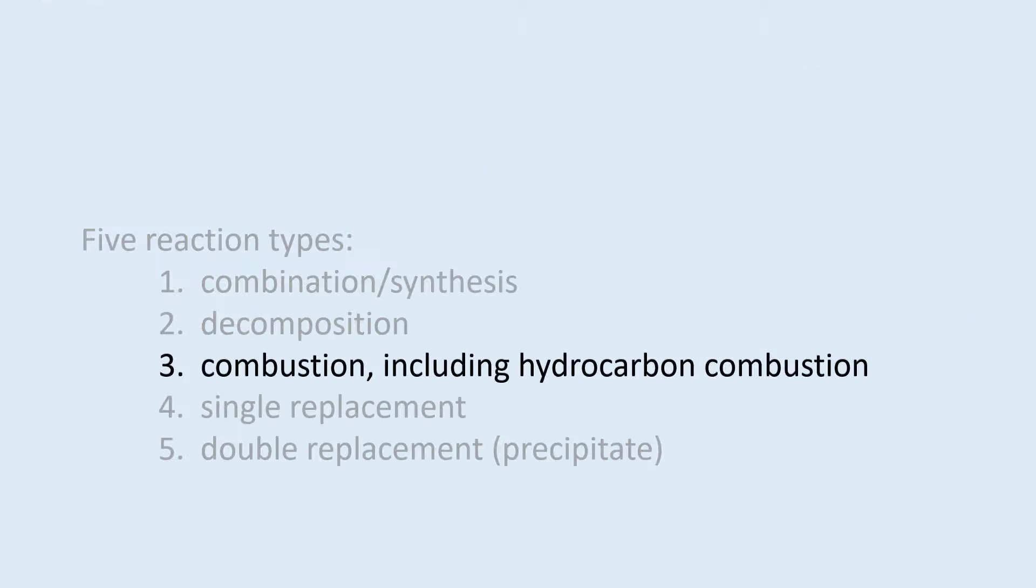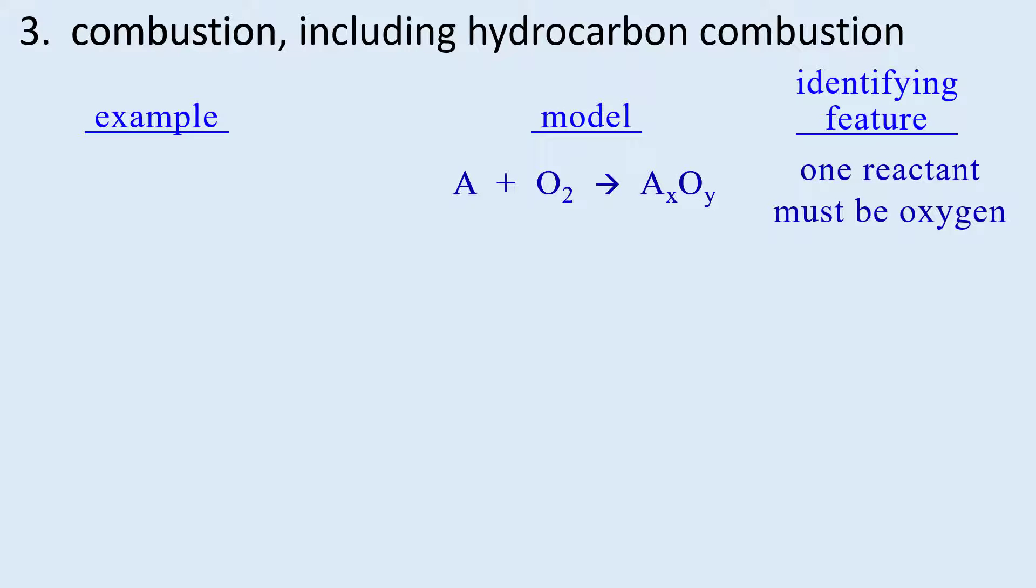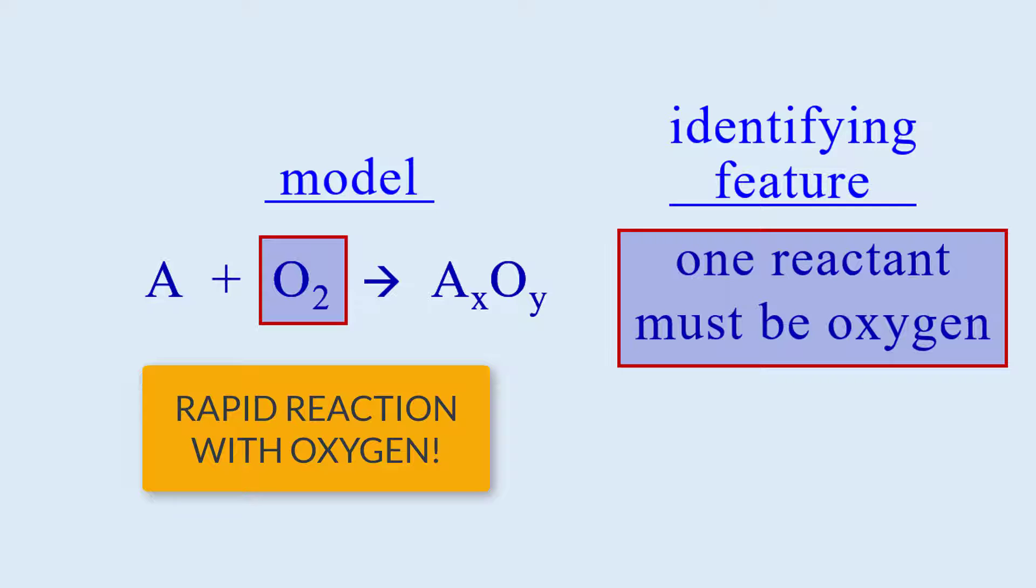The third reaction type is combustion including hydrocarbon combustion. Let's look at the model and identifying feature first and leave out hydrocarbon combustion for now. We see in the model that oxygen is a reactant and that is what identifies a combustion reaction. In particular, this is a rapid reaction with oxygen that would constitute combustion.